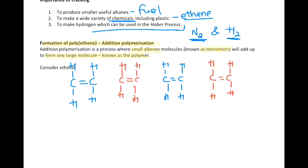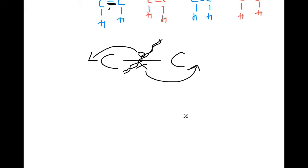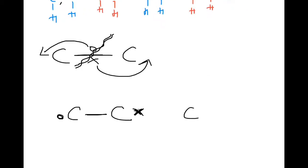Let's consider ethene. Many ethene molecules add together — let's use four to start. The double bond in ethene breaks open. A covalent bond consists of a pair of electrons, so when the double bond breaks, one electron goes to each carbon. This leaves each carbon with an unpaired electron, which allows it to bond to the carbon from the next ethene molecule.